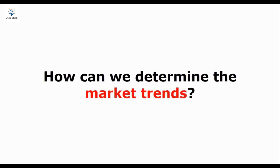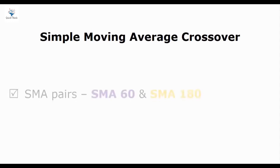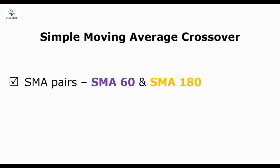In order to determine market trends, you can use the Simple Moving Average Crossover Strategy. A moving average is a trend-following indicator created based on past prices. We'll use a pair of simple moving averages. We'll wait until these moving averages cross over each other so we can determine the incoming market trend. I personally prefer using the 180-day and the 60-day simple moving averages, simply because they seem to be more accurate than other moving averages and, most importantly, these moving averages work for me.